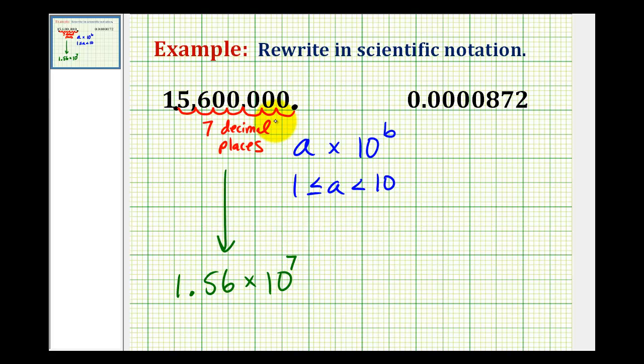Now sometimes it's difficult to remember whether this exponent should be positive or negative, and here's an easy way to remember. If we start with a large number like we did here, 15,600,000, in order for this to equal a large number, this exponent here will have to be positive. Multiplying by a positive power of 10 will make 1.56 larger.